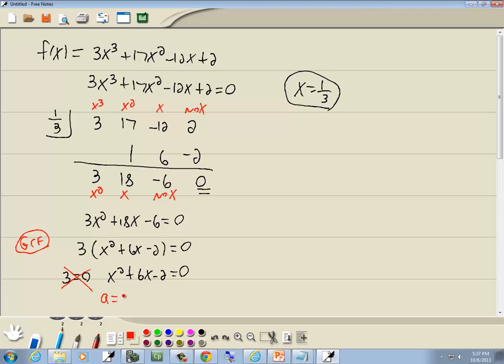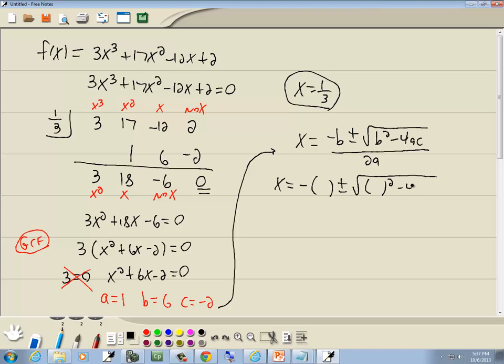A is whatever number is in front of our x squared, which is 1. B is our number before our x, which is 6. And C is our number at the end, which is negative 2. And our quadratic formula is negative b plus or minus square root of b squared minus 4ac all over 2a. I'm going to replace my variables with parentheses before I plug them in.